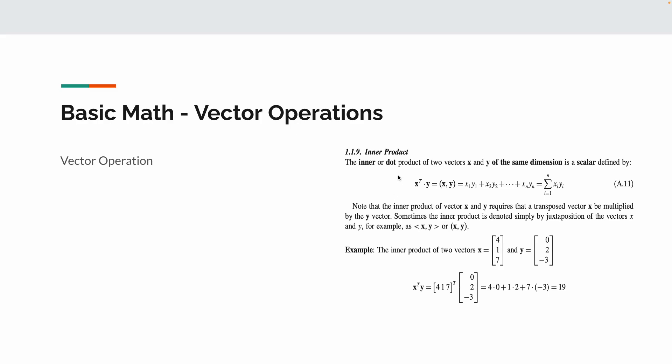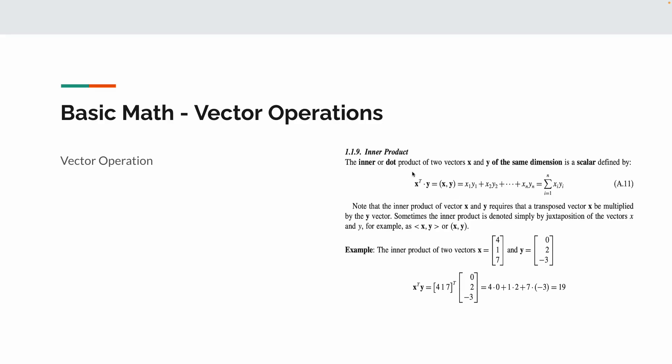Dot product of x and y, x and y being two vectors, is their element-wise multiplication and then you sum over. For example, here: 4, 1, 7 and 0, 2, 3. You multiply 4 times 0, 1 times 2, and 7 times 3, and then you do the sum. That will give you the dot product.